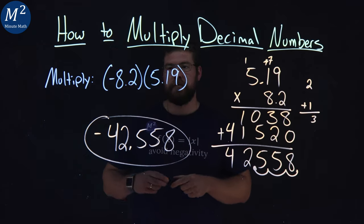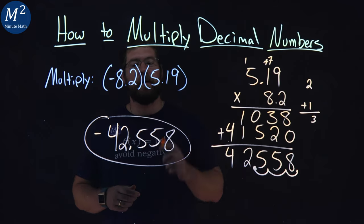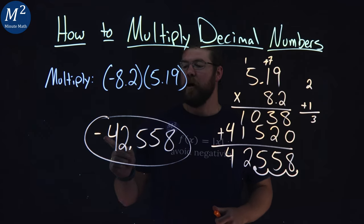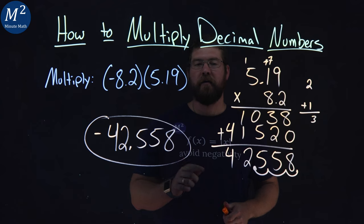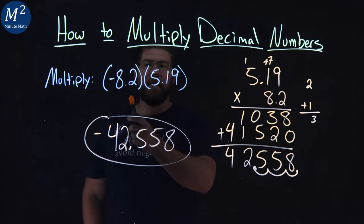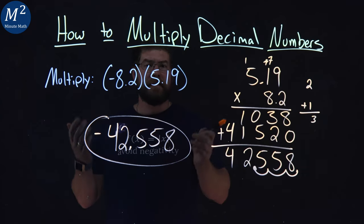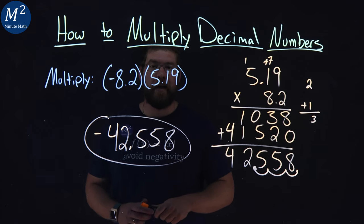And there we have it. Negative 8.2 times 5.19 comes out to be negative 42.558. And you can know that's kind of close, because negative 8 times 5 is negative 40. We're pretty close to that.